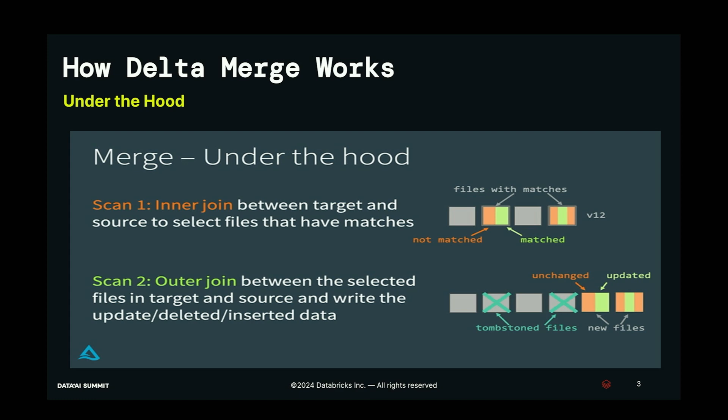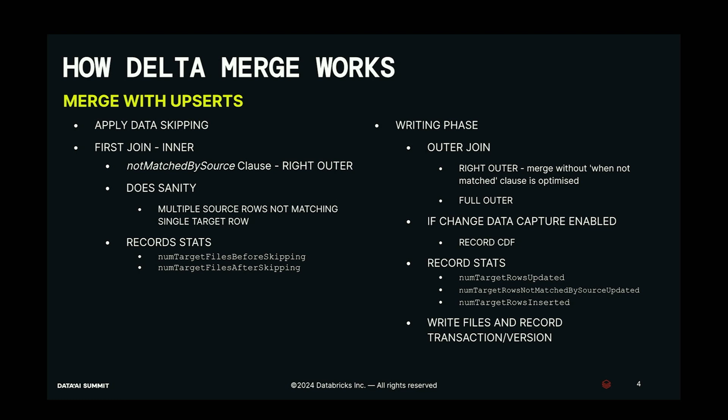You might already know that merge involves two scans on your data. The first is an inner join where it tries to join your source and your target Delta table to find the matched files. Then there's an outer join which takes the selected files from your target Delta table, does an outer join with the source, and writes out your updates, deletes, and inserts. I'd like to do a deeper dive into this high-level overview of what Delta merge entails.